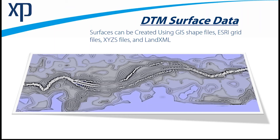With regard to surface data, we can create the surface in the model using GIS shapefiles, ESRI grid files, XYZ files, and LandXML. You really want a detailed surface in the model, particularly if it's a 1D/2D model. Many users will pull the node rim elevations or spillcrest elevations from the surface data and begin to define their stormwater network using that surface data, so it's very important.